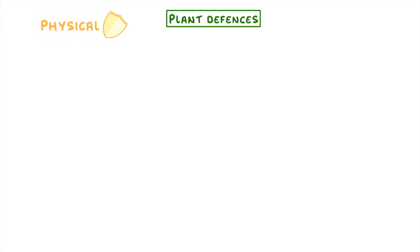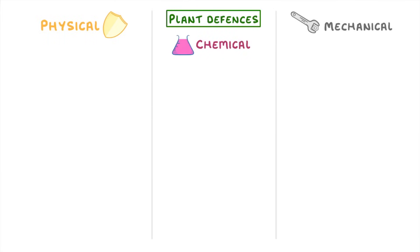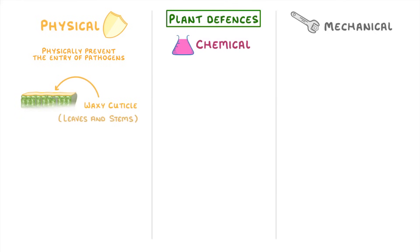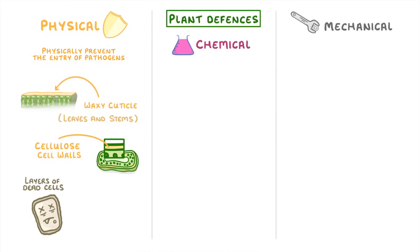The last thing we need to cover are plant defences, which can be split between physical, chemical, and mechanical. Physical defences act to physically prevent the entry of pathogens, and include a waxy cuticle, which often covers the leaves and stems of plants, the cellulose cell walls around each individual cell, and the layers of dead cells that some plants have around their stem, like bark.